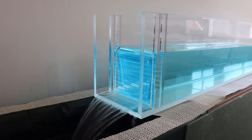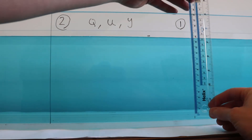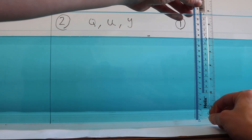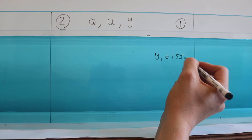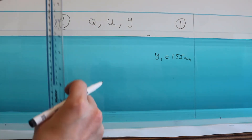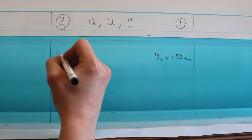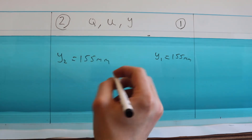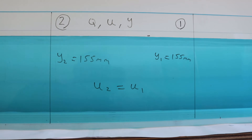Now let's consider some examples of uniform and non-uniform flow in the flume. In this example, we can see that the flow depth is the same at points 1 and 2, and this is also a steady flow as the depths are not changing with time. So if discharge is constant, and the depth and therefore the cross-sectional area are the same at points 1 and 2, we know that the velocity will also be the same at both points. So this is clearly a uniform flow — and specifically, this is a steady, uniform flow.